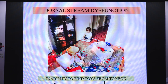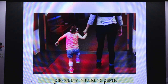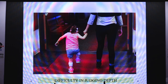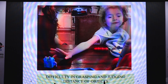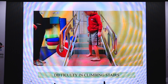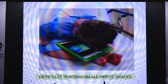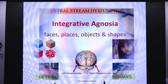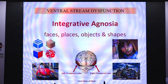Common examples of dorsal stream dysfunction include: inability to find toys from a toy box, difficulty in judging depth where a child lifts legs way too high, difficulty in grasping and judging distance of objects from the body, and difficulty climbing stairs — most often due to inferior field effects. There is also difficulty seeing very small prints or images. Ventral stream dysfunction results in integrative agnosia of faces, places, objects, and shapes.